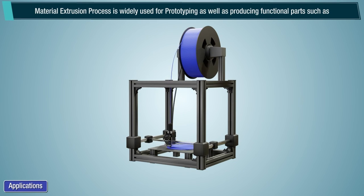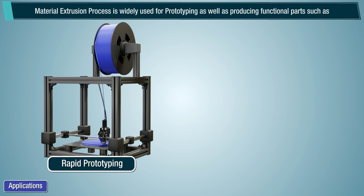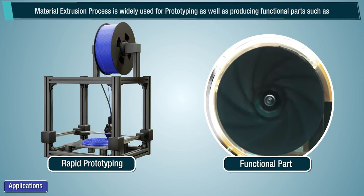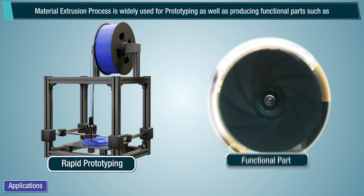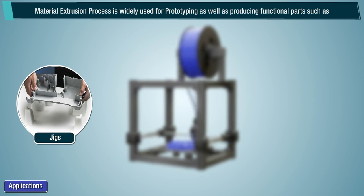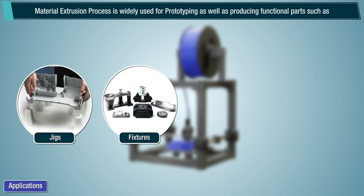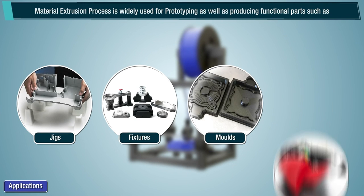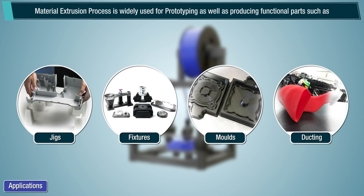Material extrusion is widely used for prototyping as well as producing functional parts such as jigs, fixtures, molds, and ducting.